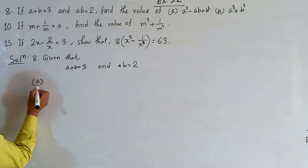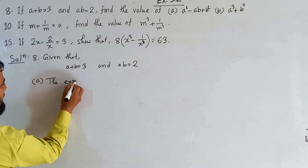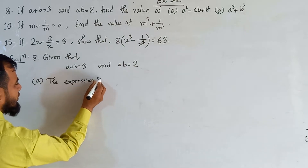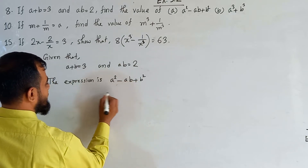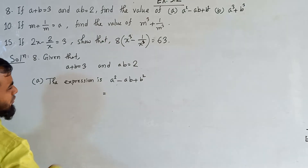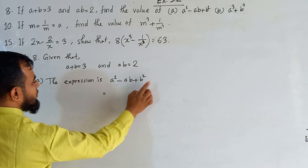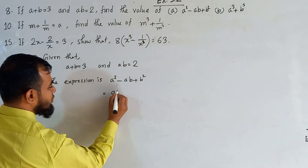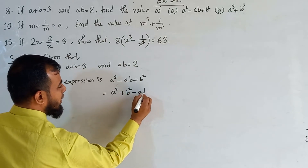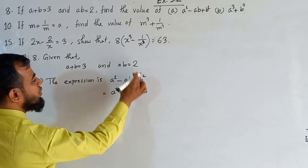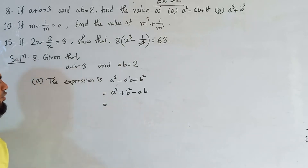Now, activity A — we need to find out the value of A squared minus AB plus B squared. The expression is A squared minus AB plus B squared. Now, we have got the value of AB. The value of AB is given here as 2, but the value of A squared plus B squared is not given. That is why I am arranging this as A squared plus B squared together, and minus AB separately. We know AB but we don't know A squared plus B squared.